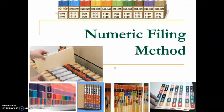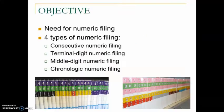Apart from that, once we use numbers, we definitely need to have color coding identifications so that we can differentiate every digit. The objective for this subtopic is to understand what is needed for Numeric Filing — the situations or characteristics of a company that require its use. Numeric Filing is divided into 4 types: Consecutive Numeric Filing, Terminal Digit Numeric Filing, Middle Digit Numeric Filing, and Chronologic Numeric Filing.